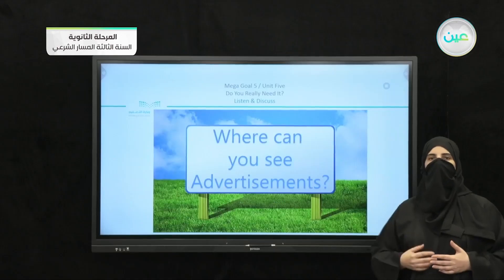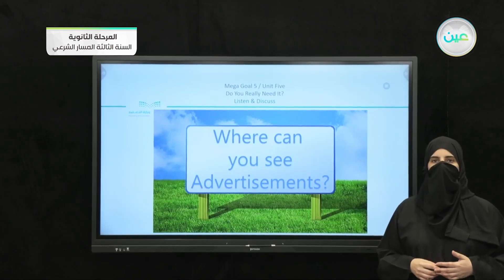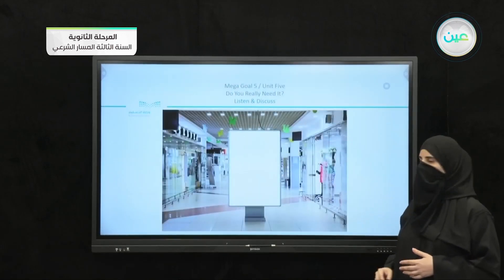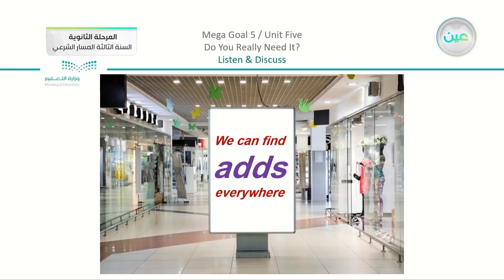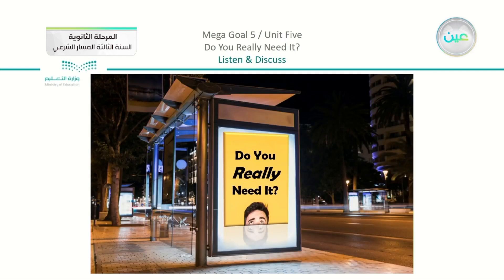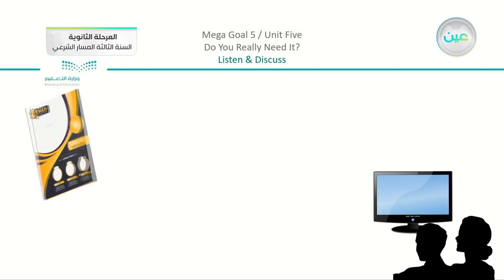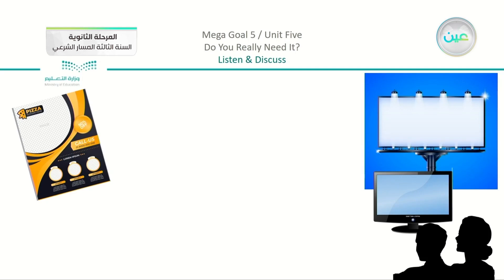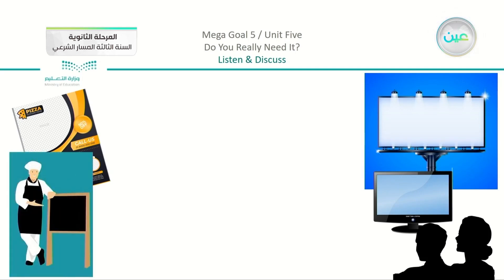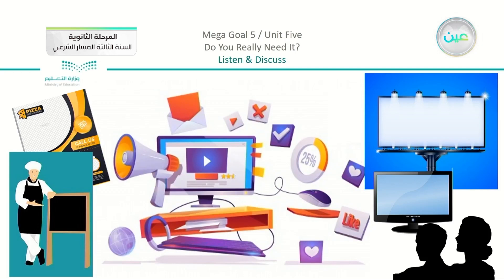We mentioned that we see advertisements on TV, but we can also see them in other places. Where can you see advertisements in general? From the picture, you can see this is not on TV. We can see ads everywhere — for example, on the streets, in booklets or flyers that we sometimes see in supermarkets, on billboards, at restaurants and cafes, and of course on social media. There are many platforms online where we can see different advertisements.